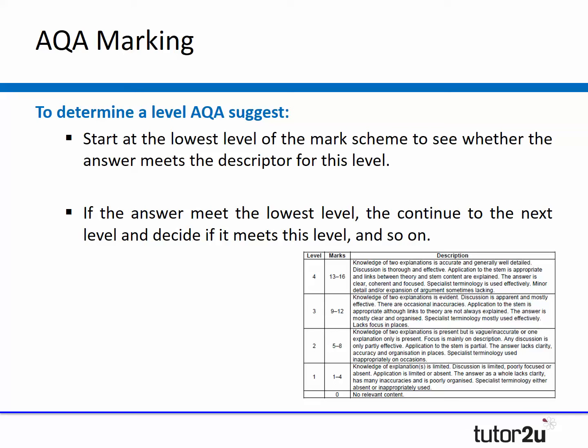In order to determine a level, AQA suggests that you should start at the lowest level of the mark scheme — you can see a picture of the mark scheme on the screen now — to see whether the answer meets the descriptor for that level. If the answer meets the lowest level you then continue to the next level, decide if it meets that level, and continue up the descriptions until it fits the particular description you're looking for.